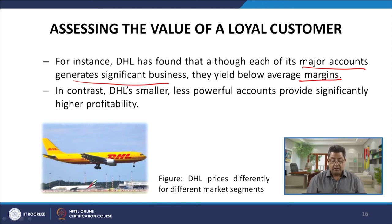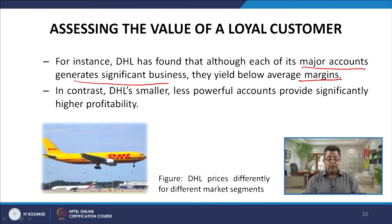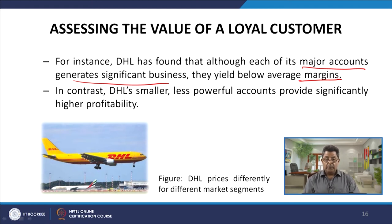DHL found that although each of its major accounts generates significant business, they yield below-average margins. In contrast, DHL's smaller, less powerful accounts provide significantly higher profitability. So the big accounts contribute to business volume but not necessarily to profits, while smaller accounts contribute more to profits.